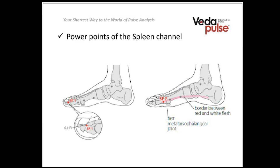The next point is number three, located just next to the outstanding bone — this is the Yuan point. Working with this point you can influence all processes connected to digestion, breathing, and immunity. It is the core point for this system, so it is quite important to know it and work with it.